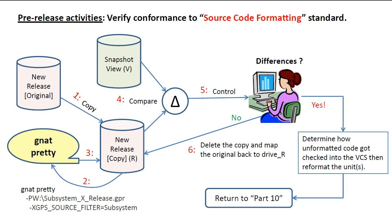This process verifies that all source code units conform to the official formatting standard. Step 1: make a copy of the official release and map the copy to Drive R. Steps 2 and 3: submit the released project file configured as a subsystem to the GANAT PrettyPrinter tool. This will cause every unit in the subsystem to be formatted according to the rules embedded in the project file. Note the use of the X switch to override the default value of the scenario variable specified in the project file.